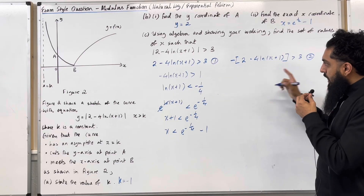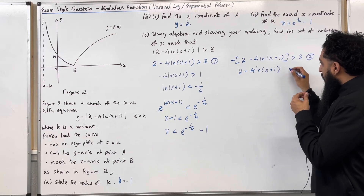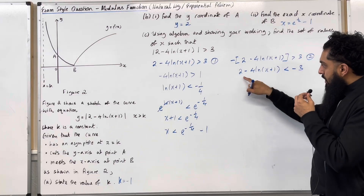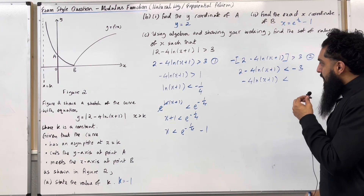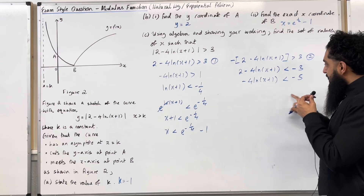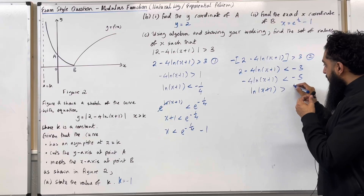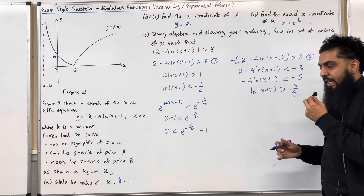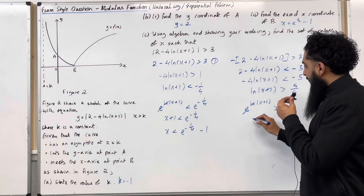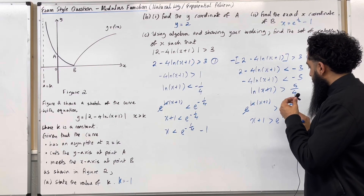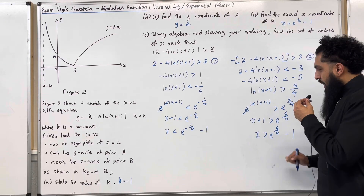Moving on to the second inequality: begin by dividing by negative 1, which flips the inequality. Then take the 2 to the right-hand side — so minus 3 minus 2 is minus 5. Divide by negative 4, which flips the inequality again, giving more than 5 over 4. Apply e to both sides — e and ln cancel — take the 1 to the right-hand side, and that is the solution.